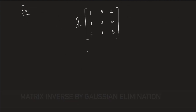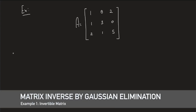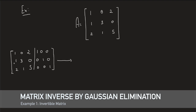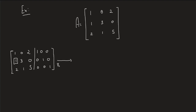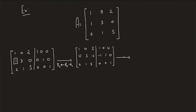Let me give you an example. Let's invert a matrix by starting with the augmented matrix, placing A on the left and the identity on the right. We start by nulling out the first entry of R2 using R2 ← R2 − R1. The first and third rows remain the same, while the second row becomes [0, 3, −2 | −1, 1, 0].